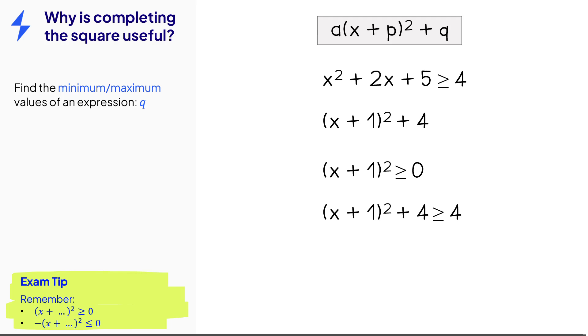Once we've completed the square we can spot the minimum or maximum quickly. It will always be the value q and if a is positive it will be a minimum and if a is negative it will be a maximum. So this one here it will be a minimum and it'll be negative 7. This one's got negative in front so it'll be a maximum and it will be 5.